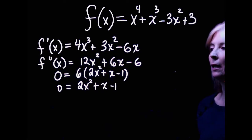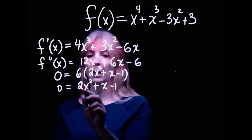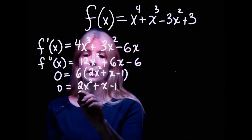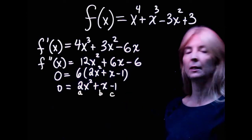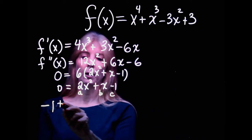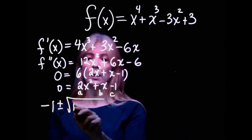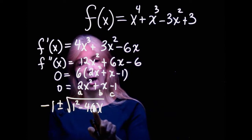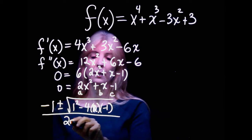Or I remember that we have that lovely little quadratic formula. So if you remember the quadratic formula says that this is a, this is b and this is c. So my a being 2, my b being 1, and my c being negative 1.